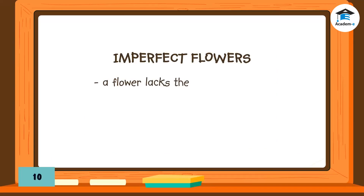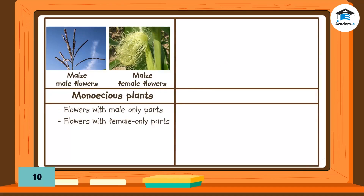If a flower lacks the pistil or stamen, the flower is considered an imperfect flower. Plants with imperfect flowers can be monoecious or dioecious. Monoecious plants have male and female flowers on the same plant — meaning a plant has some flowers with only the pistil (female part) and other flowers with only the stamen (male part).